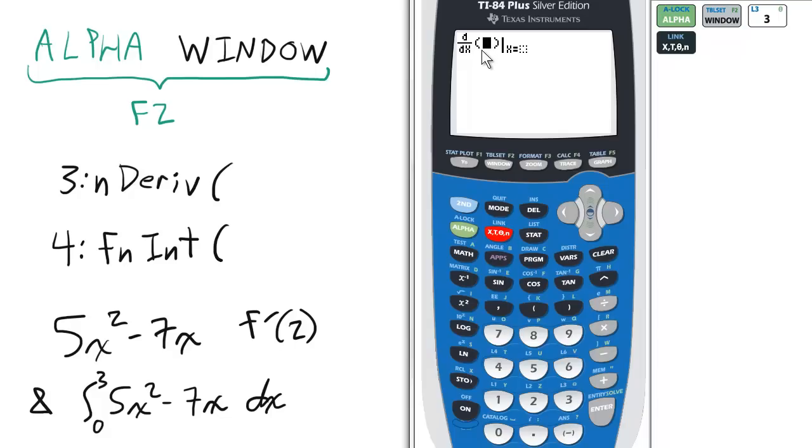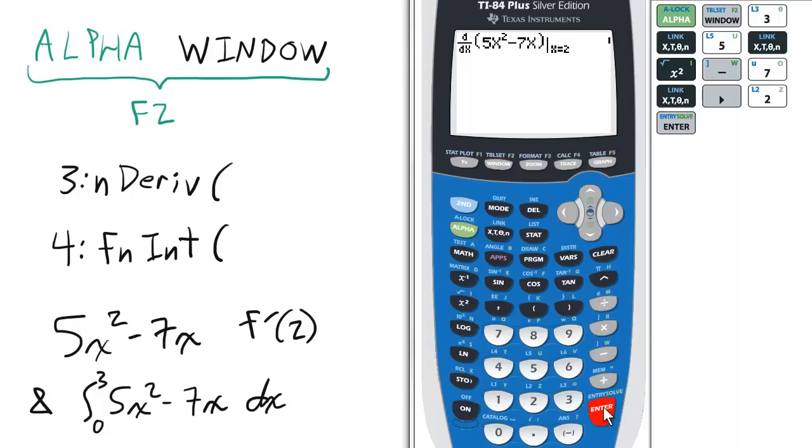And then here it scrolls over automatically to the function. So let's enter 5x squared minus 7x. Scroll over. We want to find the derivative at the point x equals 2 and press enter. The answer is 13.